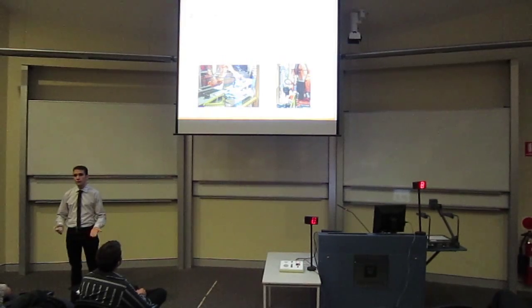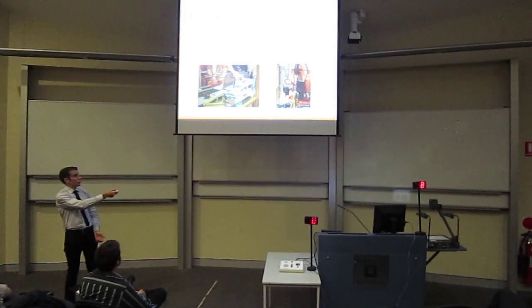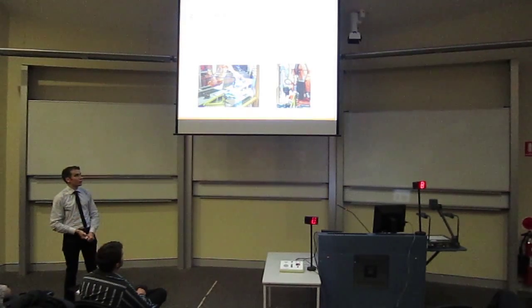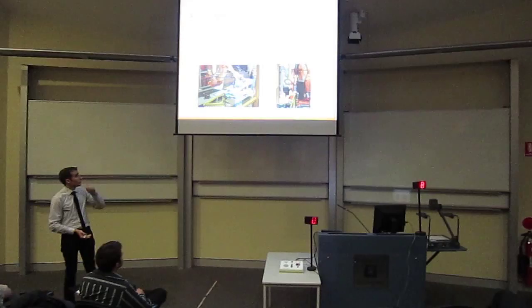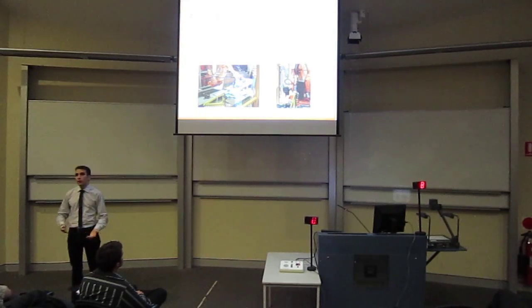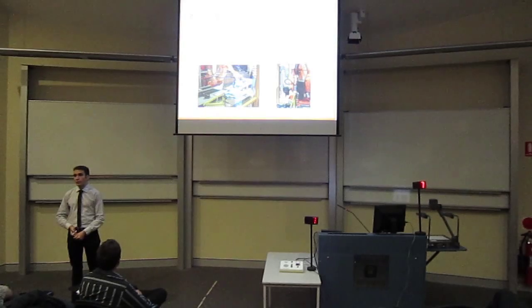You can use the same kind of system to both build up the part and then use the same system to machine it away. As shown on the right here, this is another robotic arm with a machining attachment. Another advantage is that these kinds of manipulators have a very large work envelope, so you can create very large parts.